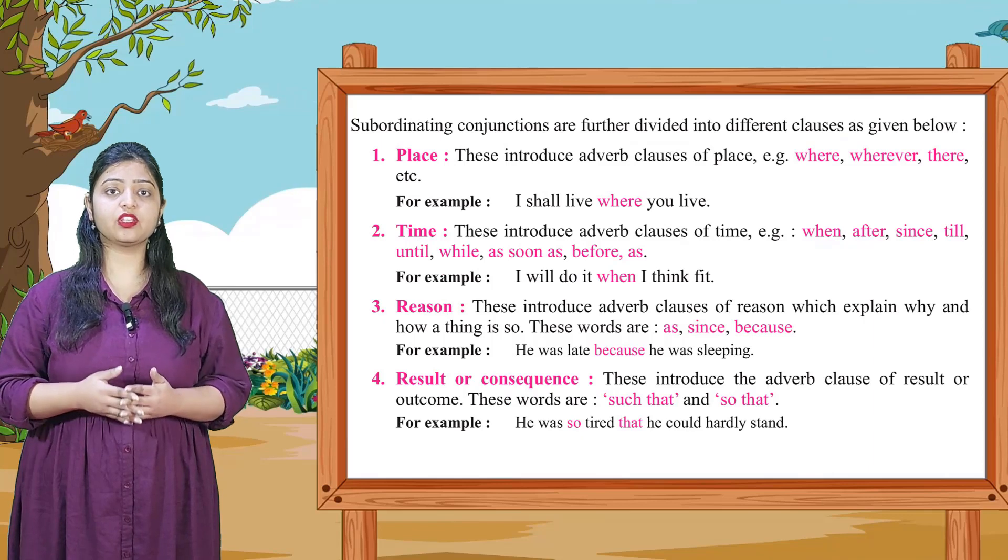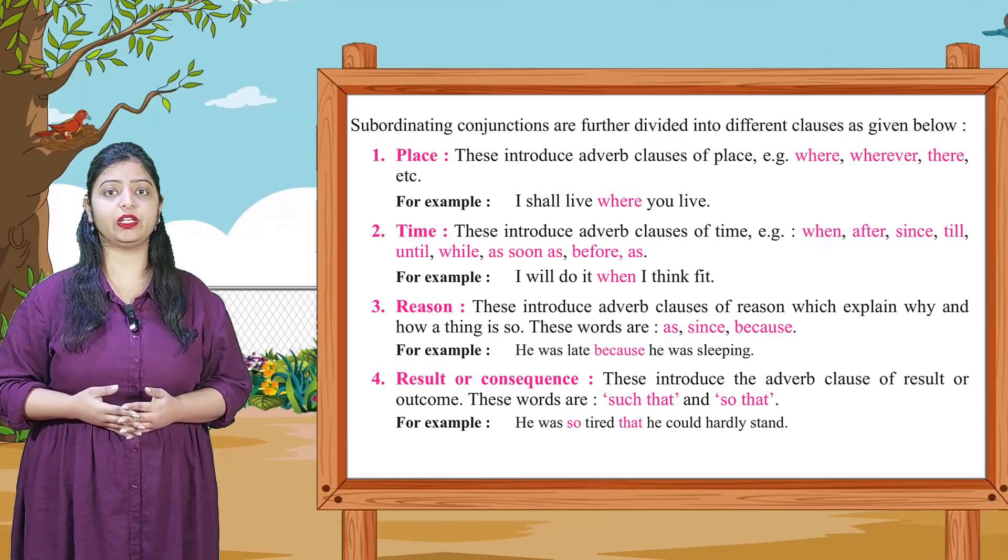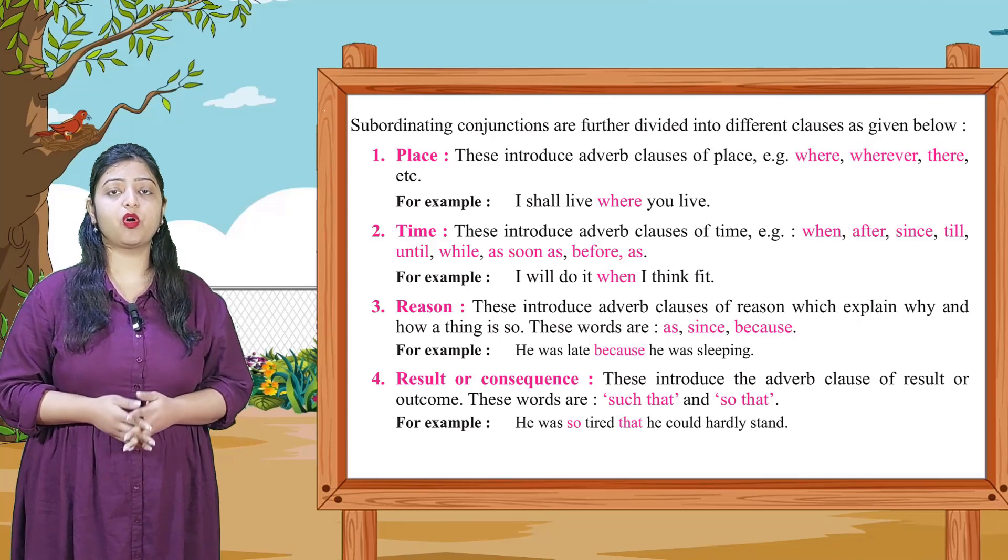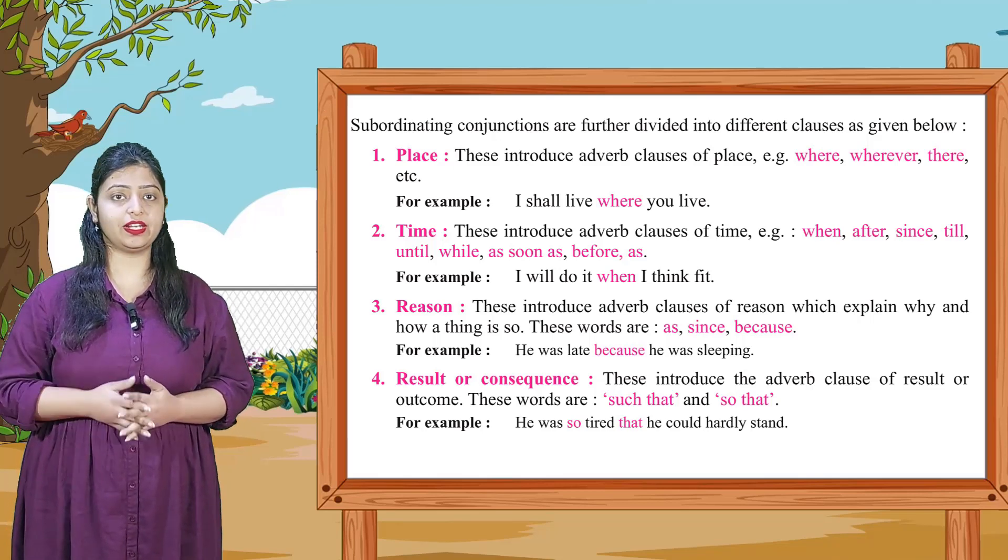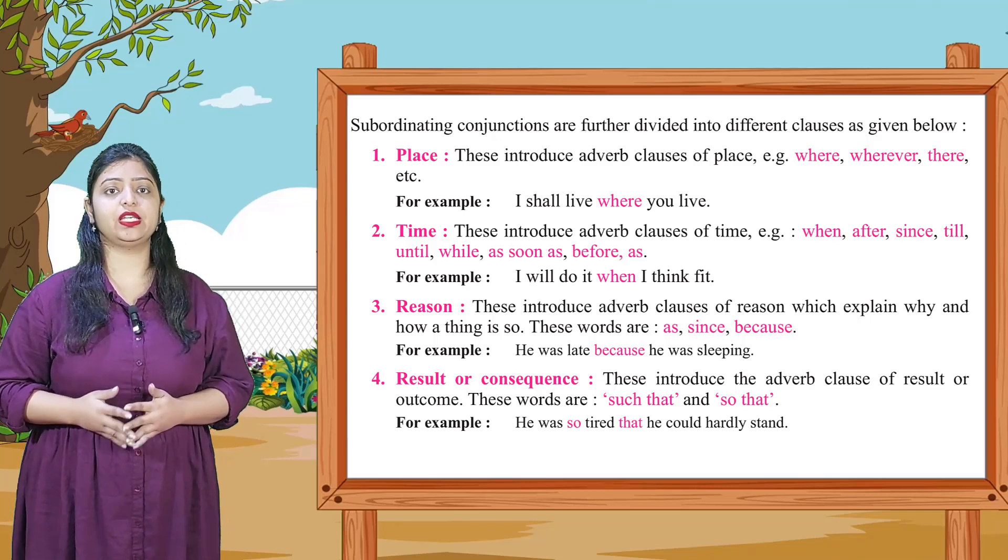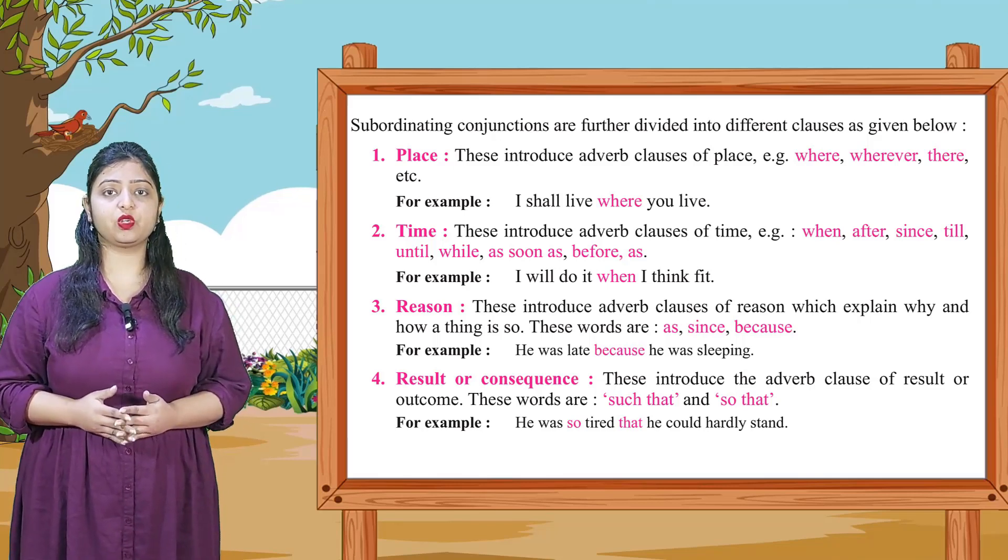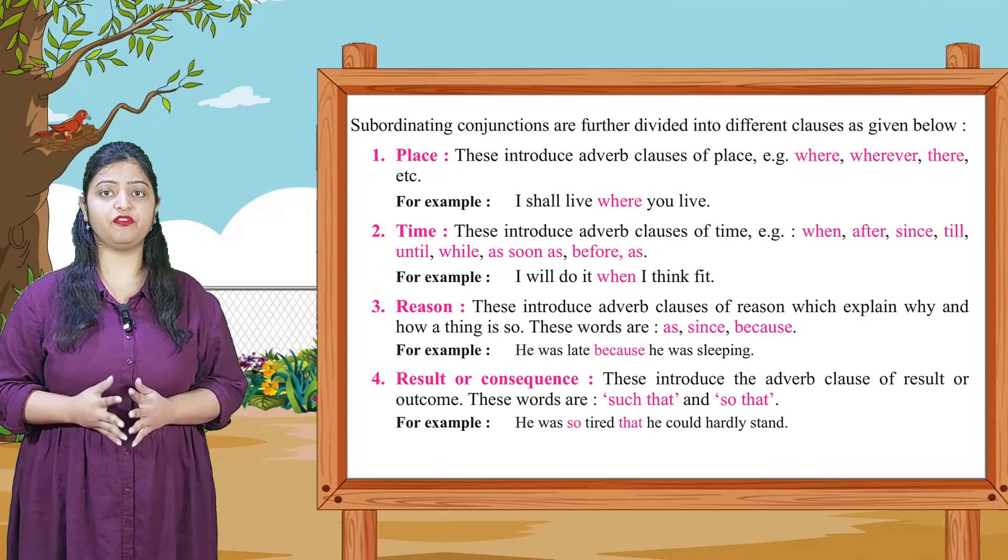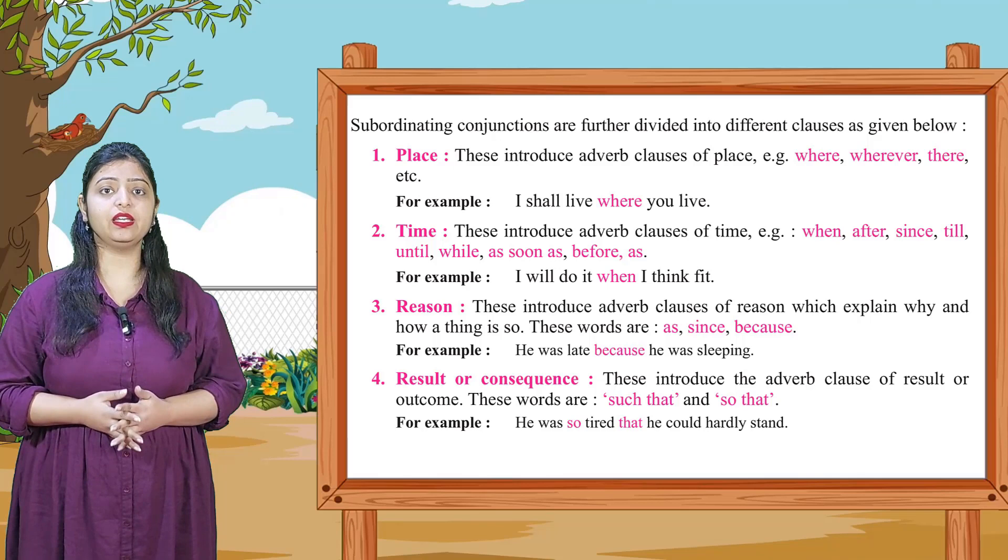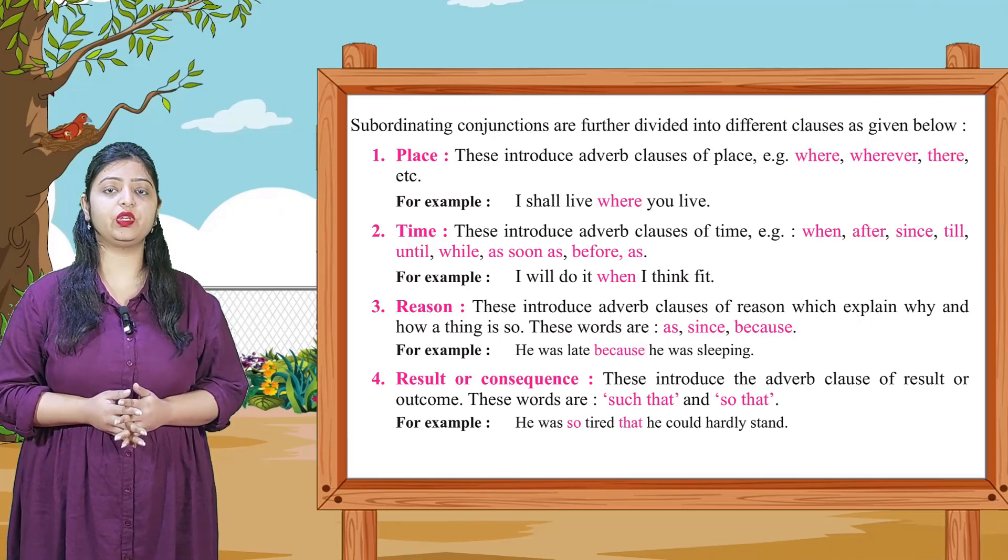Subordinating conjunctions are further divided into different clauses as given below. First is place. These introduce adverb clauses of places, examples: where, wherever, there, etc. Example: I shall live where you live.